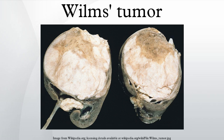Stage 2: For Stage II Wilms Tumor, one or more of the following criteria must be met. Tumor extends beyond the kidney but is completely excised. No residual tumor apparent beyond the margins of excision. Any of the following conditions may also exist: tumor involvement of the blood vessels of the renal sinus and/or outside the renal parenchyma; the tumor has been biopsied prior to removal or there is local spillage of tumor during surgery, confined to the flank; or extensive tumor involvement of renal sinus soft tissue.